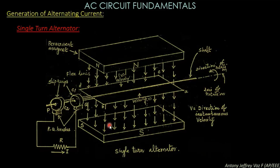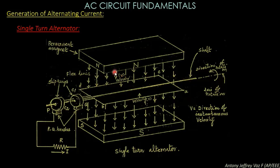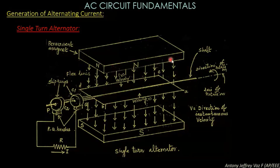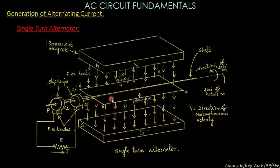This is the single turn alternator. You have already studied this generation of current in physics in 12th standard. Here also we will be having the same principle. Today I will be explaining how the alternating current is produced by the single turn alternator. According to Faraday's law, when the magnet is fixed — here is the north pole of the magnet at the top, and the south pole at the bottom — the coil is being rotated in the presence of the magnetic field.